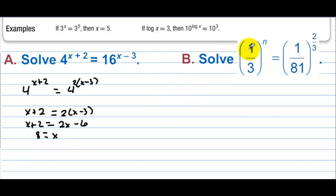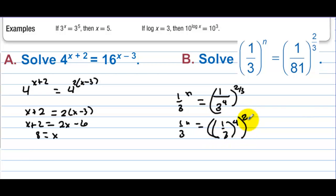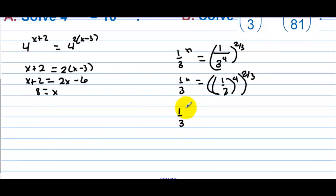Letter b, solve: 1 third to the n equals 1 over 81 to the 2 thirds. We have 1 over 3 to the n equals 1 over 3 to the 4th raised to the 2 thirds. We can write this as 1 third to the n equals 1 third to the 8 thirds. So n has to equal 8 thirds.